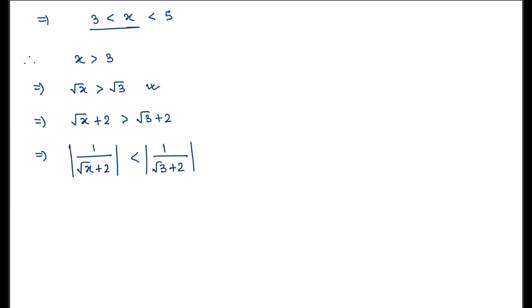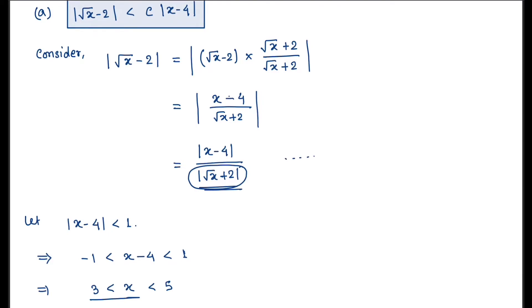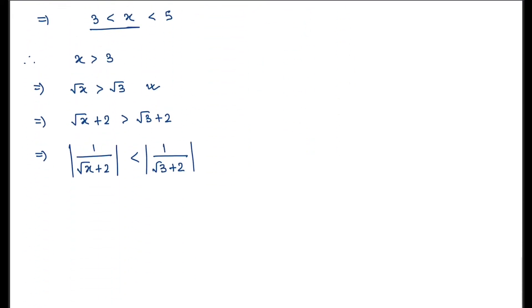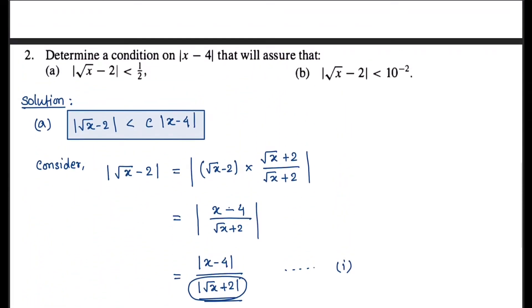Using this inequality in equation (1), we have |√x - 2| < (1/(√3 + 2)) · |x - 4|.